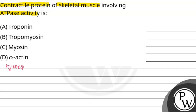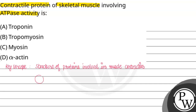The key concept is the structure of proteins involved in muscle contraction. First, we have actin — this is the actin filament, and these are the active sites of actin.